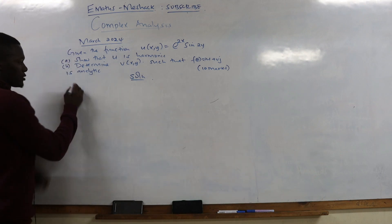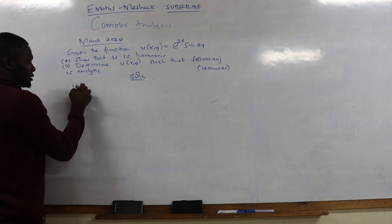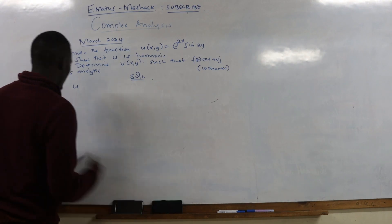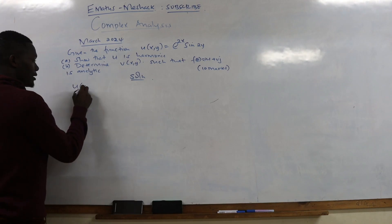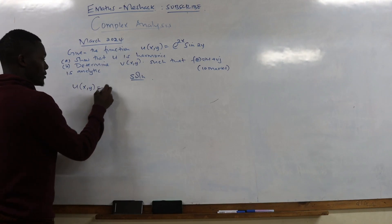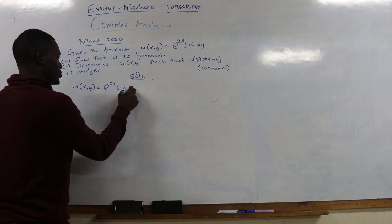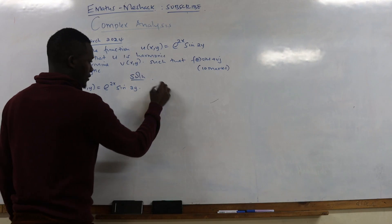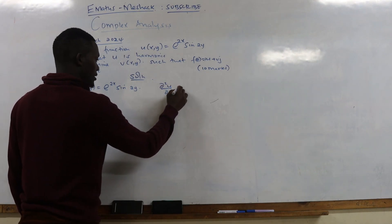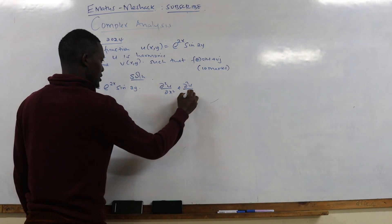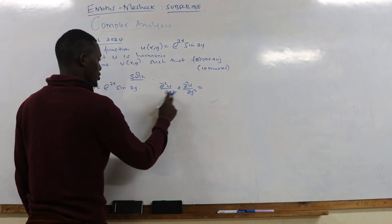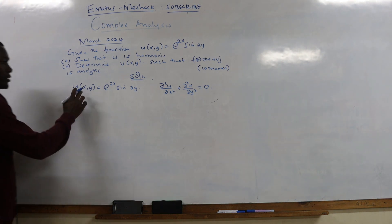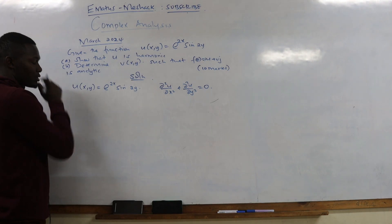Our function u(x,y) is given by e^(2x) sine of 2y. For a function to be harmonic, you have to show that the second partial derivative with respect to x plus the second partial derivative with respect to y equals zero. So now let's get the derivatives with respect to x and y twice.